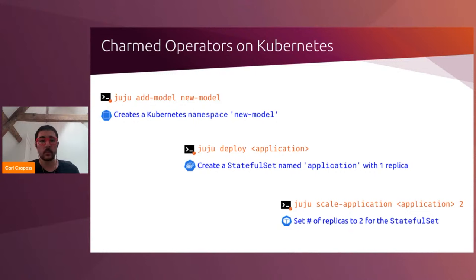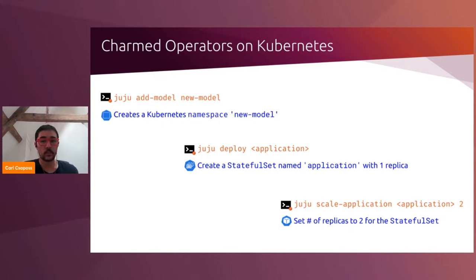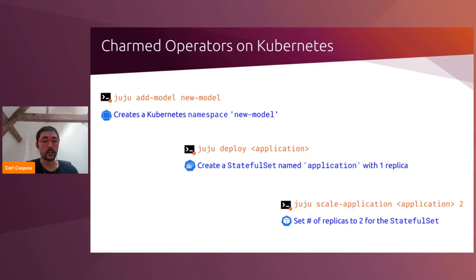So what does Juju look like in Kubernetes? When we run 'juju add-model', what Juju is doing under the hood is just creating a Kubernetes namespace — a Juju model maps directly to a Kubernetes namespace. Similarly, a Juju application is just a StatefulSet in Kubernetes, and a unit in Juju is just a pod. When we scale an application with Juju, it's setting the number of replicas for the Kubernetes StatefulSet. Juju also supports clouds besides Kubernetes — for example, virtual machines or bare metal — and provides a similar mapping of Juju concepts like a model or application to the underlying cloud primitive.